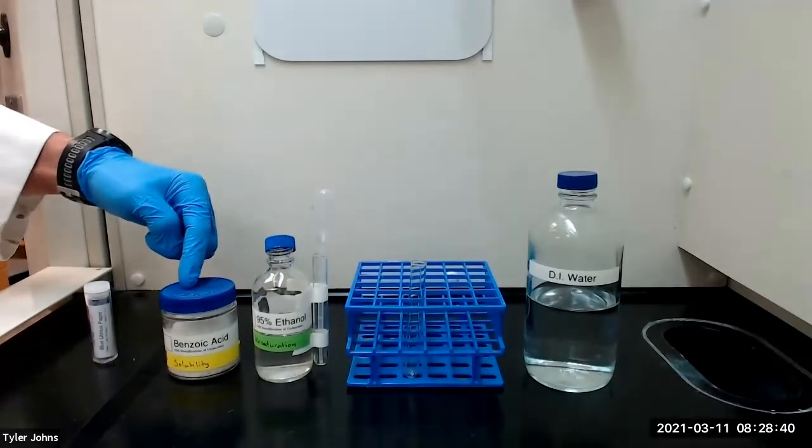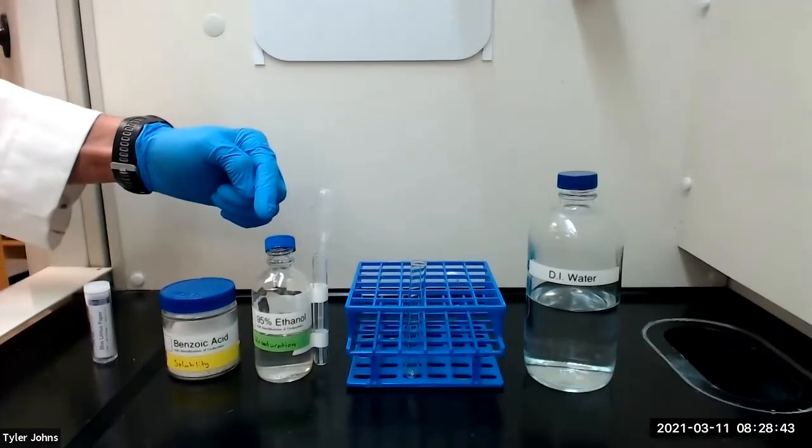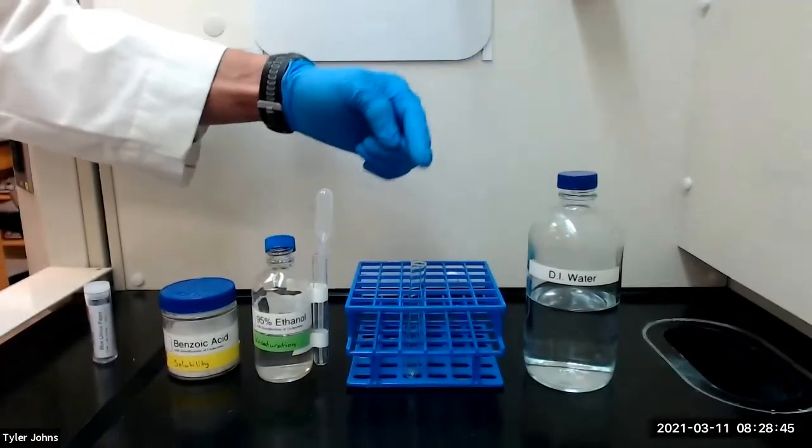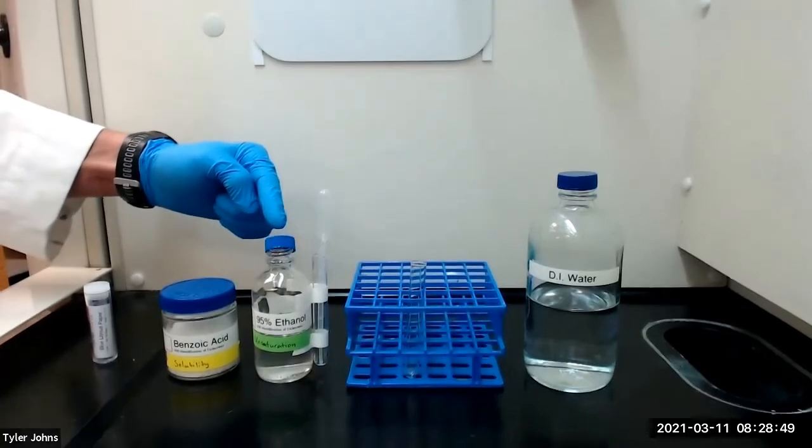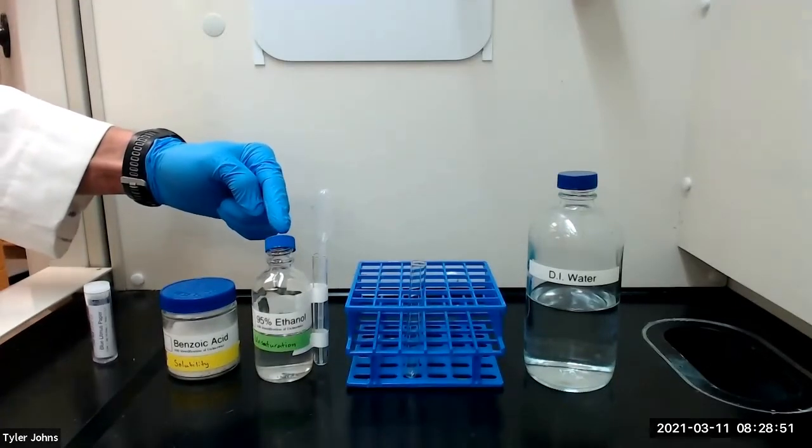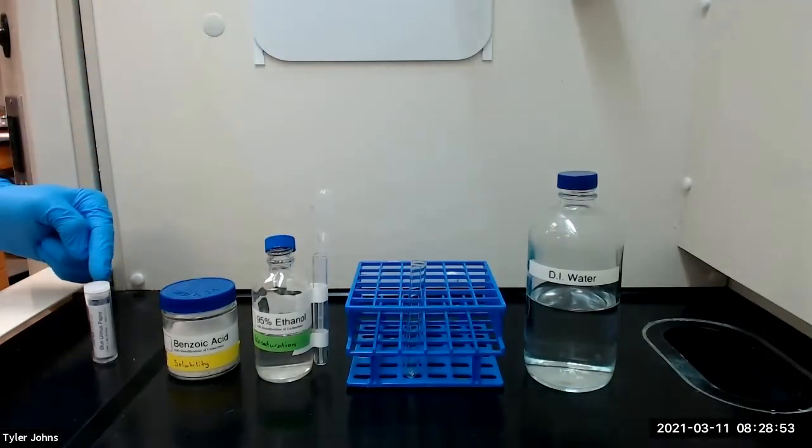We will first dissolve the compound in a test tube with the alcohol, and then we will add water until the solution just becomes cloudy. We will then clarify the solution by adding a few drops of the alcohol and test the pH using pH paper.